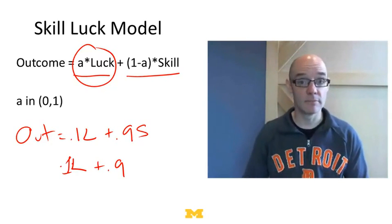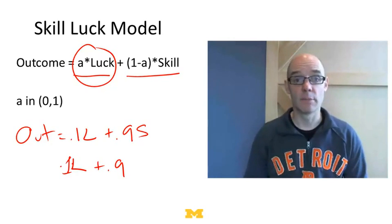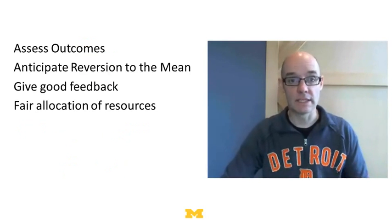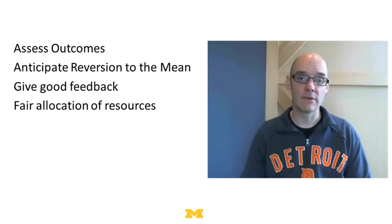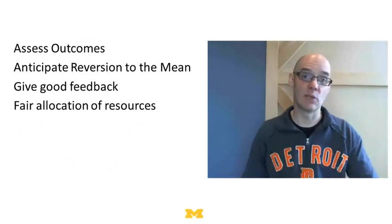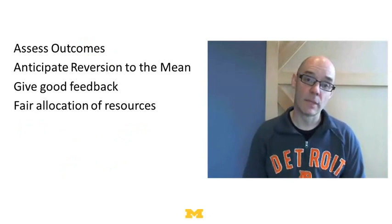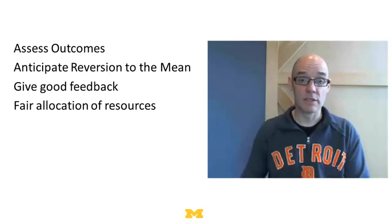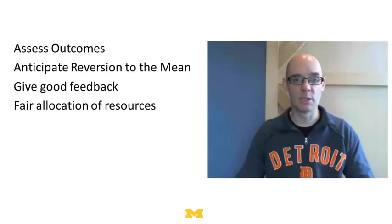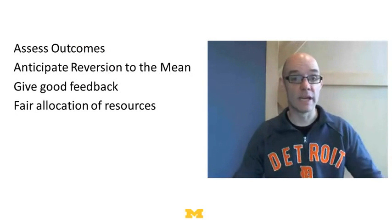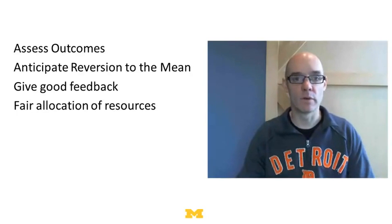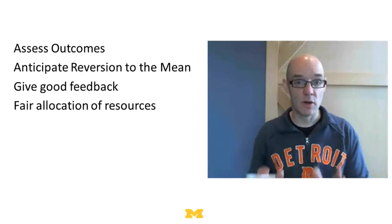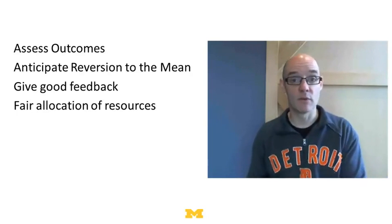Why does this matter? First, you want to fairly assess outcomes — you don't want to say someone's lucky when they're actually skillful. Second, if outcomes depend a lot on luck, there's going to be a lot of reversion to the mean. If somebody's won three times in a row but it happens to be lucky, you shouldn't expect them to win the fourth time. If it's been mostly skill, you should expect them to win the fourth, fifth, and sixth time. So understanding skill versus luck lets you figure out whether there will be reversion to the mean.